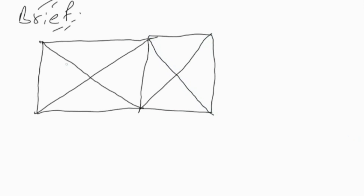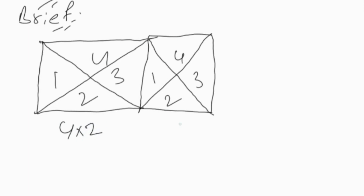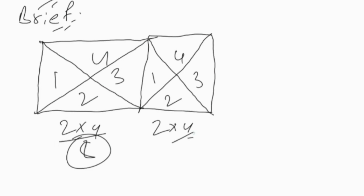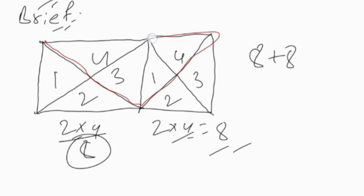So for the triangle in square type: count 1, 2, 3, 4, then again 1, 2, 3, 4. Four into two and again four into two — maintaining uniformity gives 2 into 4 equals 8. This is the 2n rule for triangle in square.